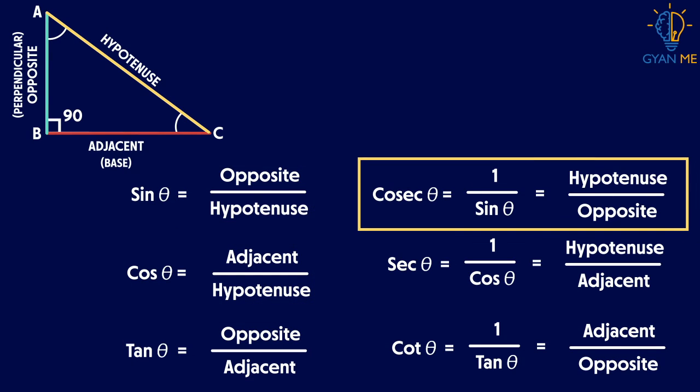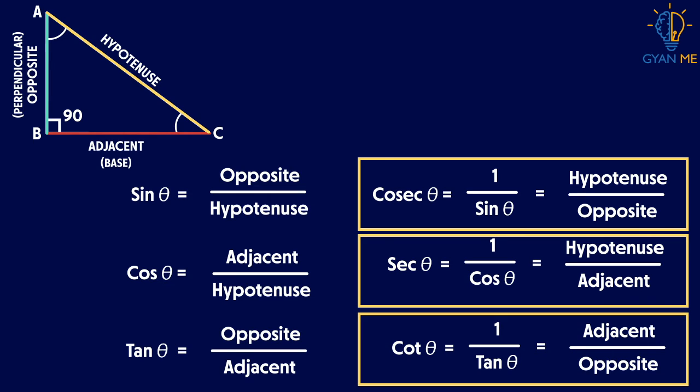Cosec can be written as one upon sine and is the ratio of hypotenuse to the opposite side. Likewise, sec is written as one upon cos and is the ratio of hypotenuse to the adjacent side. Similarly, the ratio of adjacent side to the opposite side is the cot, which is nothing but one upon tan.